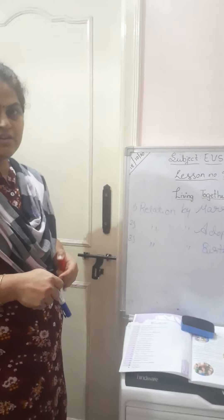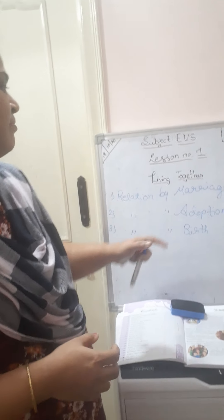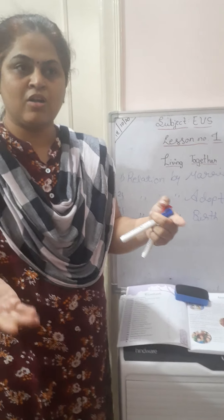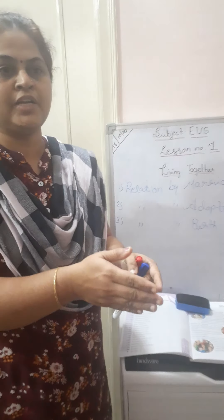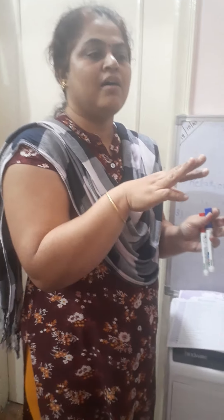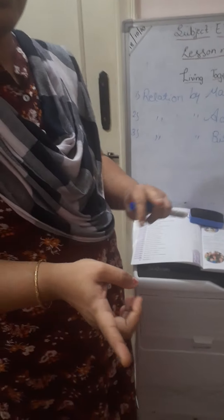Relation by marriage means how they are going to relate to one another. Suppose a man and woman, they are going to get married. They are already related to someone in their house. Now they are going to marry each other and their relationship will be husband and wife.